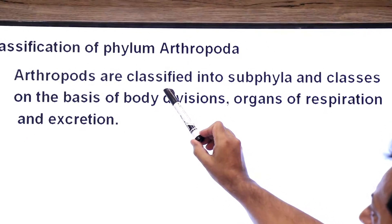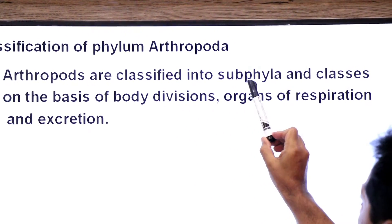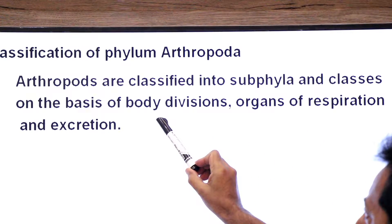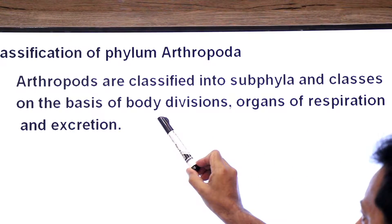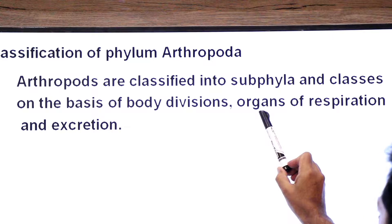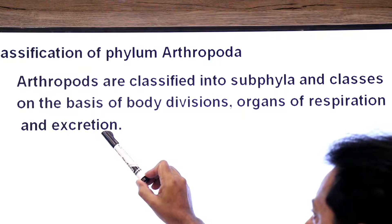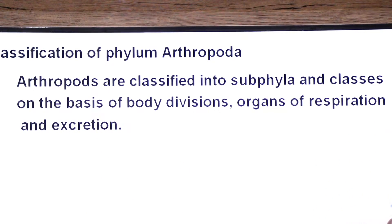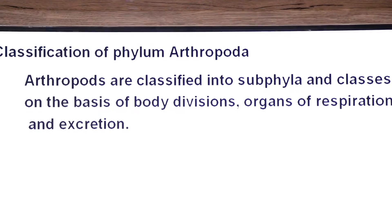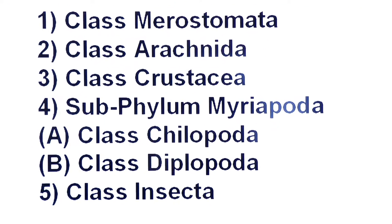Arthropods are classified into subphyla and classes on the basis of their body division, on the basis of organs of respiration, and on the basis of their excretory organs. These are the classes and subphyla of phylum Arthropoda.